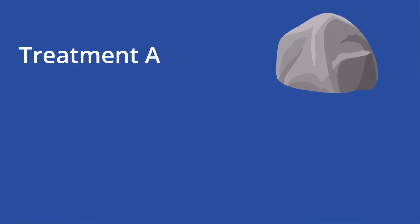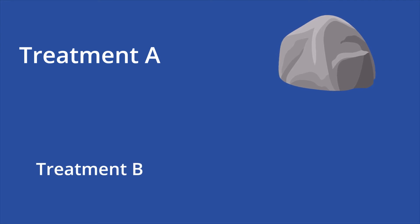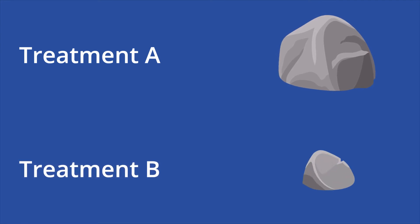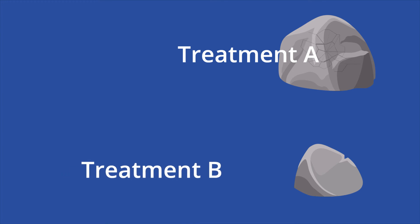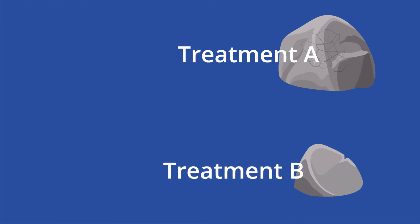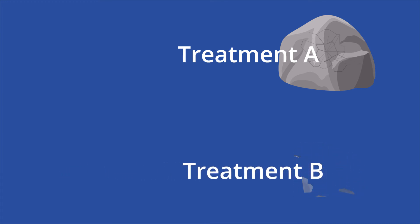Second, lurking variables tend to create misleading correlations. In the kidney stone case, the severity of the ailment significantly affects each treatment's success rates. Treatment A might be more effective than treatment B, but it was used more often for severely large stones. Treatment B, meanwhile, was used more often for the less severe small stones. This might give the impression that treatment B is more effective, but only because it was used more frequently on less severe cases than treatment A.